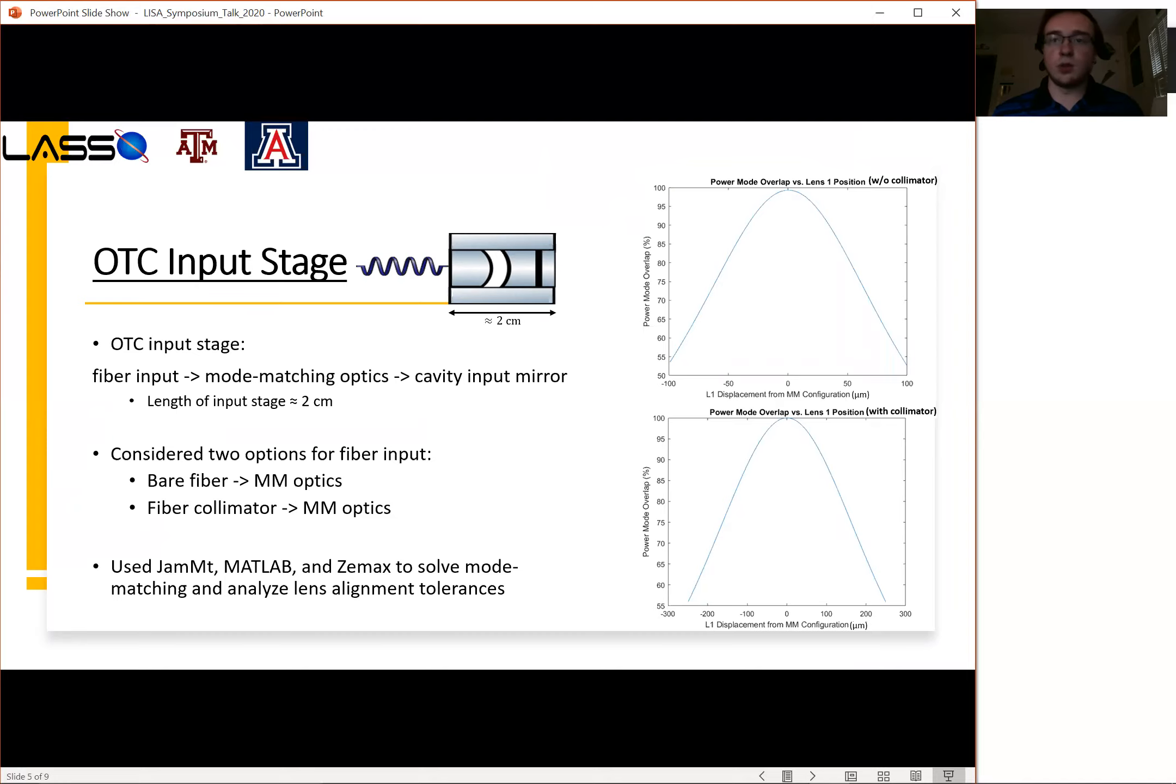The first options we wanted to consider were for the fiber input. We considered the option of matching a bare fiber into the cavity, and the other option we considered was using a fiber collimator where we would have a wider beam to match into the cavity. We used three different softwares to optimize the mode matching solutions: we used JAMMT, MATLAB, as well as Zemax. The mode matching solutions that we were able to find for all the designs we considered allowed us to keep the size of the input stage to two centimeters or less.